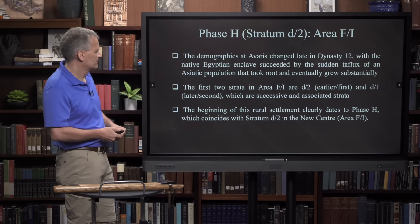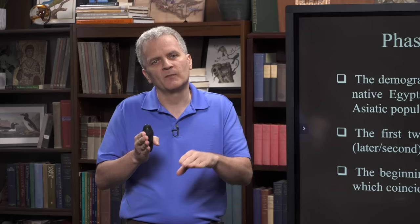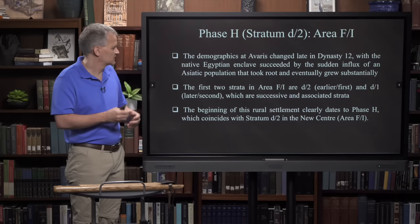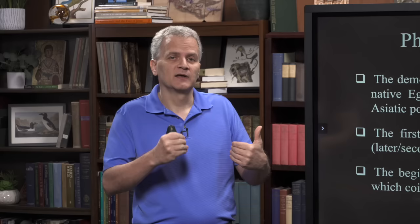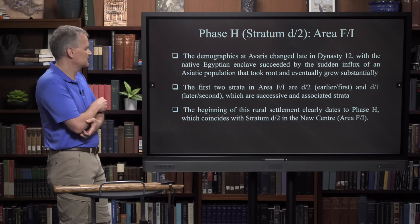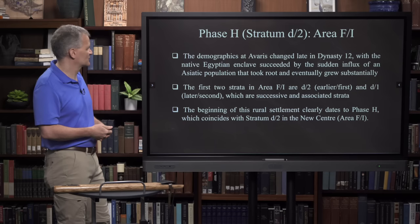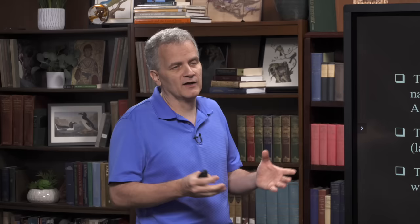The first two strata in Area F1, D2 and D1, were successive and associated strata. D2 is when Jacob moves there; at the end of D2, Jacob dies, and then his adopted sons Ephraim and Manasseh took it over. This is also the beginning of a rural settlement clearly dating to phase H, which coincides with Stratum D2. These are not urban people - they are very much rustic people with a rural settlement, as seen and understood by the excavators.